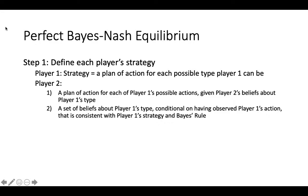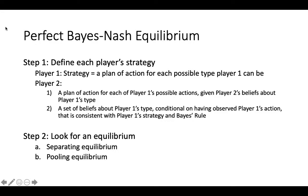The second part of player 2's strategy is a set of beliefs. These beliefs consist of what player 2 thinks the probability that player 1 is type A or type B is. Player 2 forms these beliefs by observing player 1's action and updating the probabilities set by nature using Bayes' rule. If you are unfamiliar with Bayes' rule, I recommend you review the video on Bayes' rule on this web page before moving on.